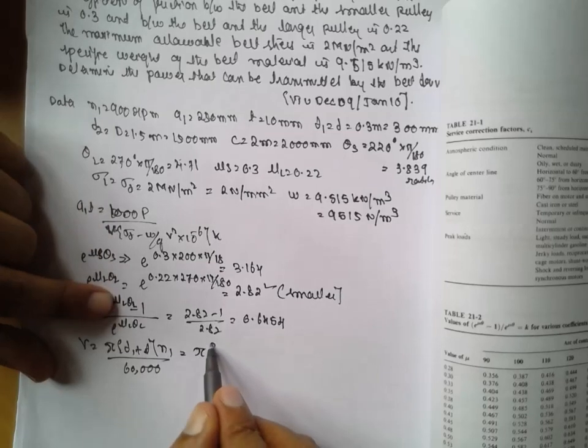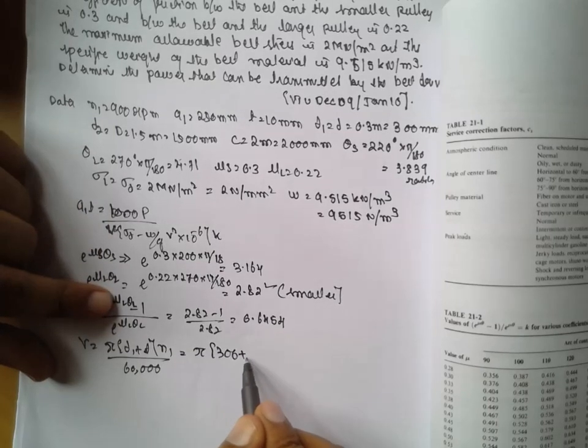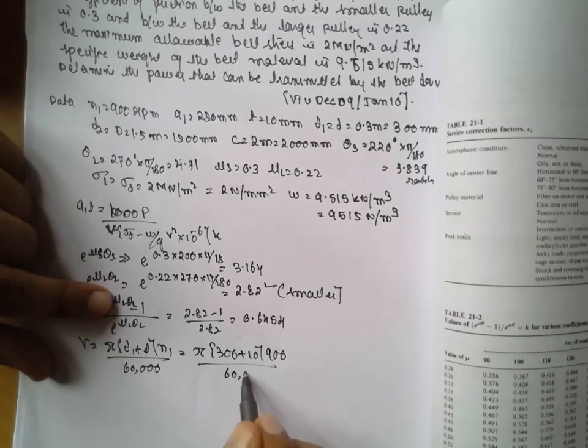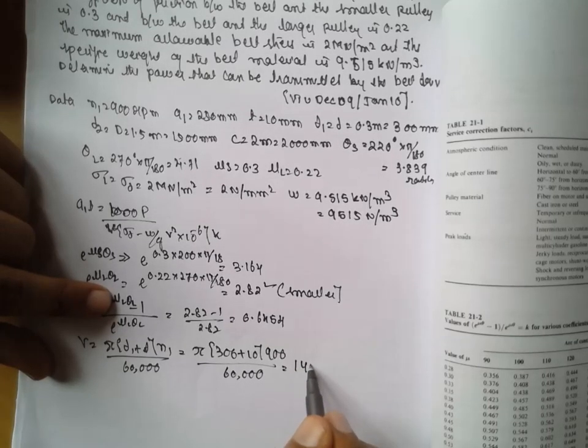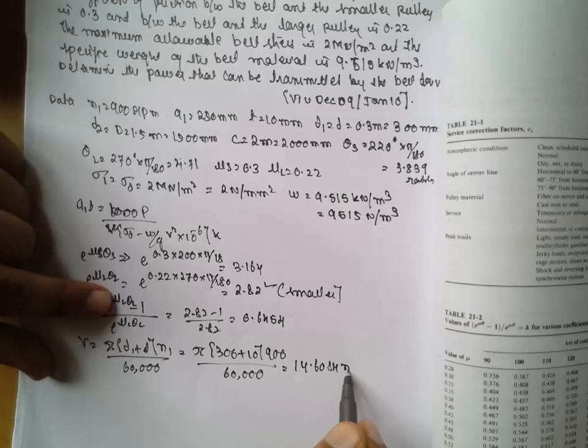Now substitute the value: pi times 300 plus 10 into 900 divided by 60,000. The answer will be 14.6084 meters per second.